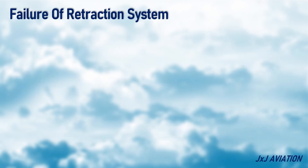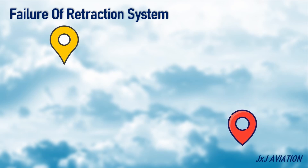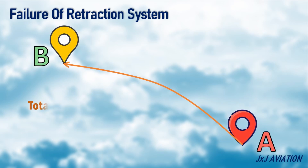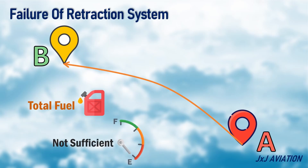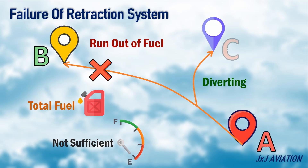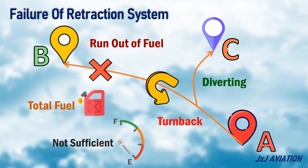In the case of a normal flight from A to B, the total amount of fuel carried will not be sufficient to cater for this failure. This means that with this failure, the aircraft will run out of fuel before reaching its destination. So diverting to a different airport or turning back to the airport of origin become the available options.